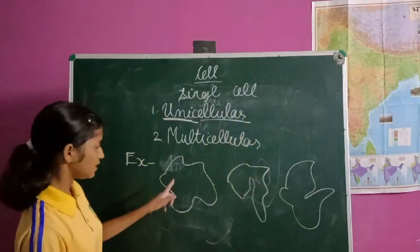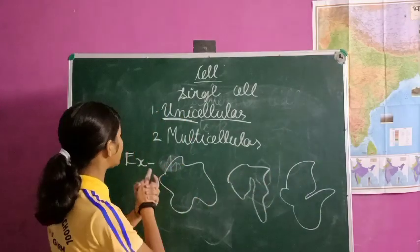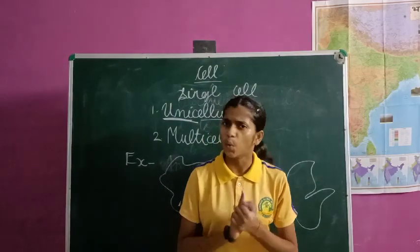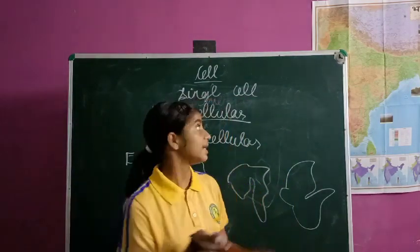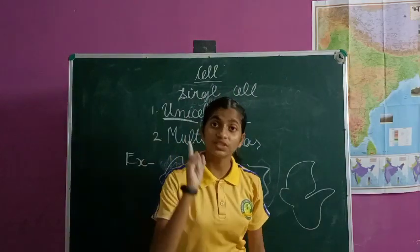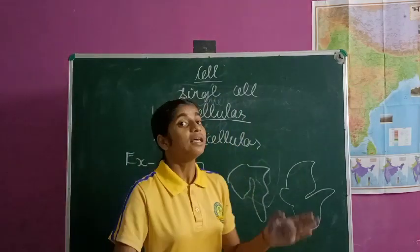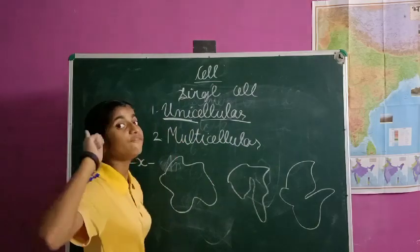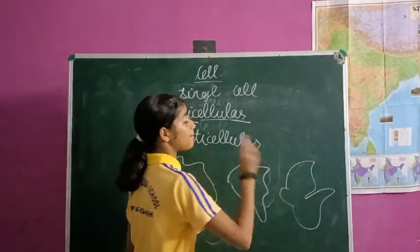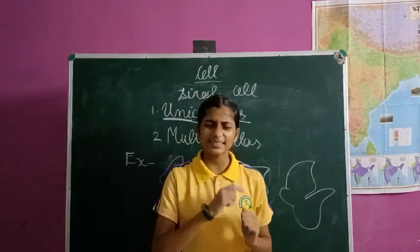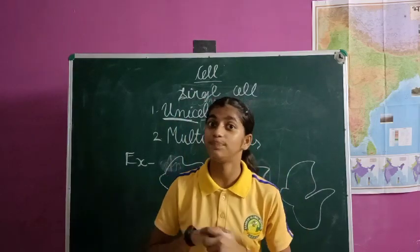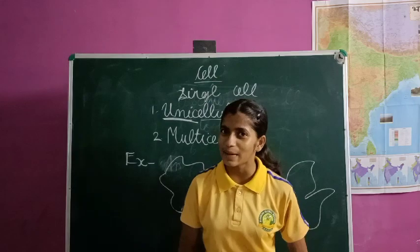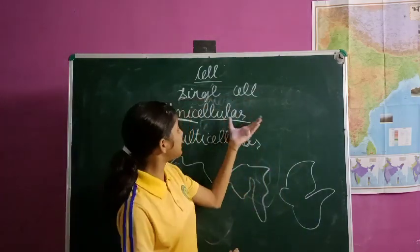Why can amoeba be in any shape? Because it is a unicellular organism — it has a single cell. If we have many cells, the cells are assembled. But here it has only one cell, that's why it can change its shape every time. And you know another thing — white blood cells (WBC) are also unicellular, that's why they are also able to change their shape. So this is all about unicellular.